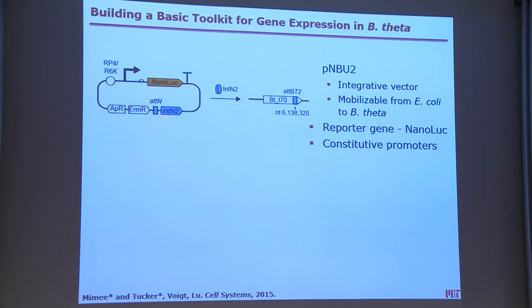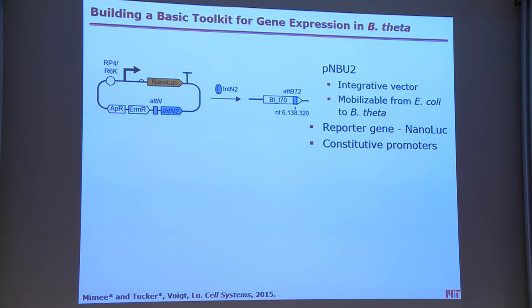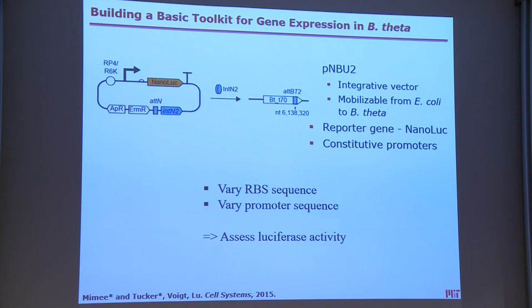We started from a simple plasmid developed in the Gordon lab, pNBU2, which is an integrative plasmid in Theta that integrates into a serine tRNA. Since there are only two serine tRNAs in Theta, inactivating one limits the possibility of multiple integrations. The plasmid is selected with erythromycin, is a suicide plasmid in Theta, and contains NanoLuc — a smaller version of luciferase — as a readout. From the pNBU2 sequence, we varied the ribosome binding site sequence and promoter sequence, assayed luciferase activity under different conditions, and engineered these elements to change expression levels.